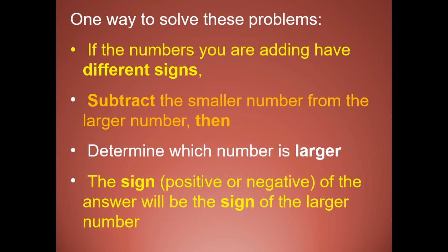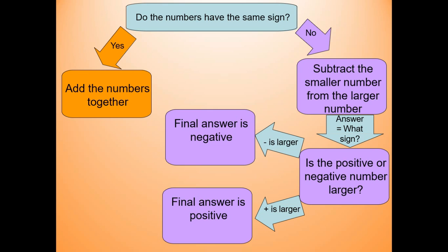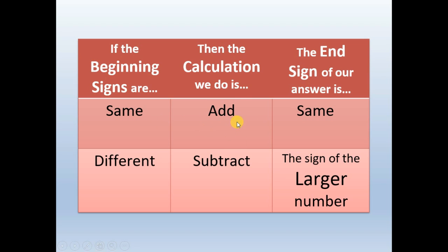If the numbers you are adding have different signs, subtract the absolute values of those numbers and then determine which is larger — the sign of the answer will depend on the sign of the larger number. Looking at this concept map: if you are adding and the signs are the same, add the numbers together and keep that sign. If they are not the same sign, subtract the smaller number from the larger number. If the larger number is positive, the final answer is positive; if the larger number is negative, the final answer is negative.